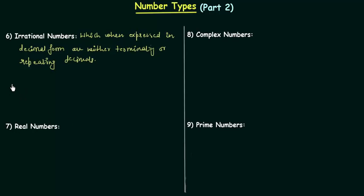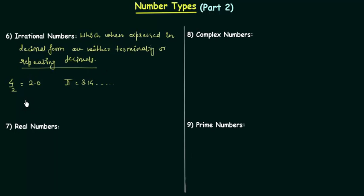For example, if we take 4 divided by 2, that equals 2.0, which is a terminating decimal, so it is not an irrational number. But if we talk about pi, pi is 3.14 and so on — this is neither terminating nor repeating. For a repeating decimal example, 10 divided by 3 equals 3.333 and so on, so 10 divided by 3 is not an irrational number but a rational number.